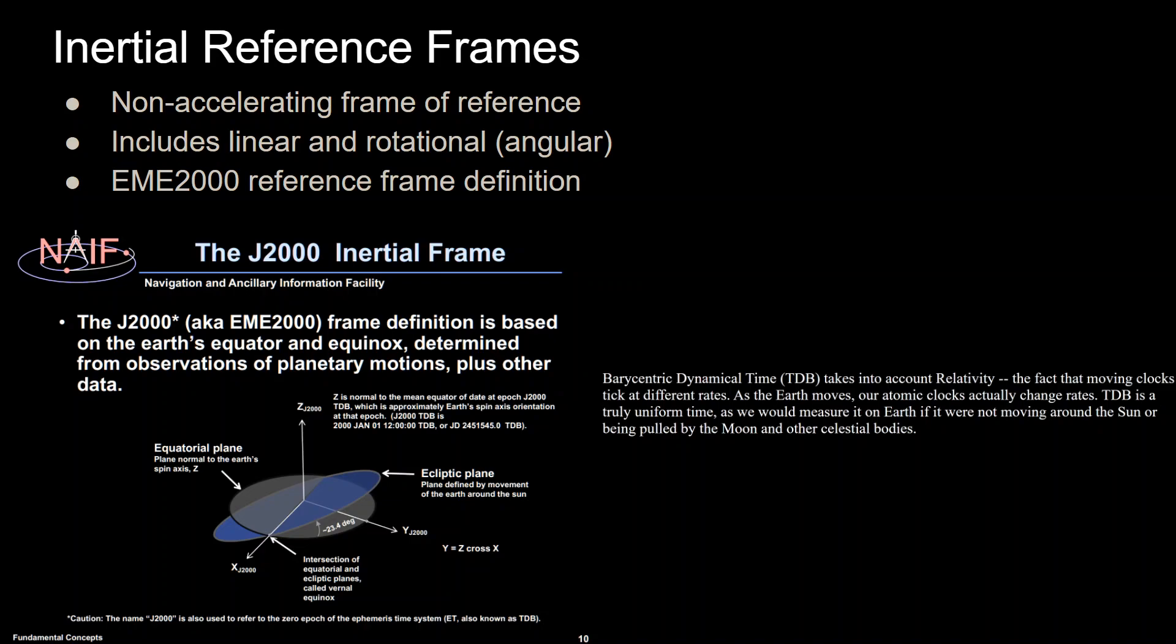This is from NASA and I'll have a link in the description to this document because it's a really great document if you want to learn more about how to define reference frames, not just inertial. This is the J2000 or EME2000 reference frame where the X-axis is defined as the intersection of equatorial and ecliptic planes of the Earth which is called the vernal equinox. The equatorial is the plane of the equator of the Earth. The ecliptic plane is the plane of the Earth's orbit around the Sun, and that's off by 23.4 degrees which is why we have seasons.